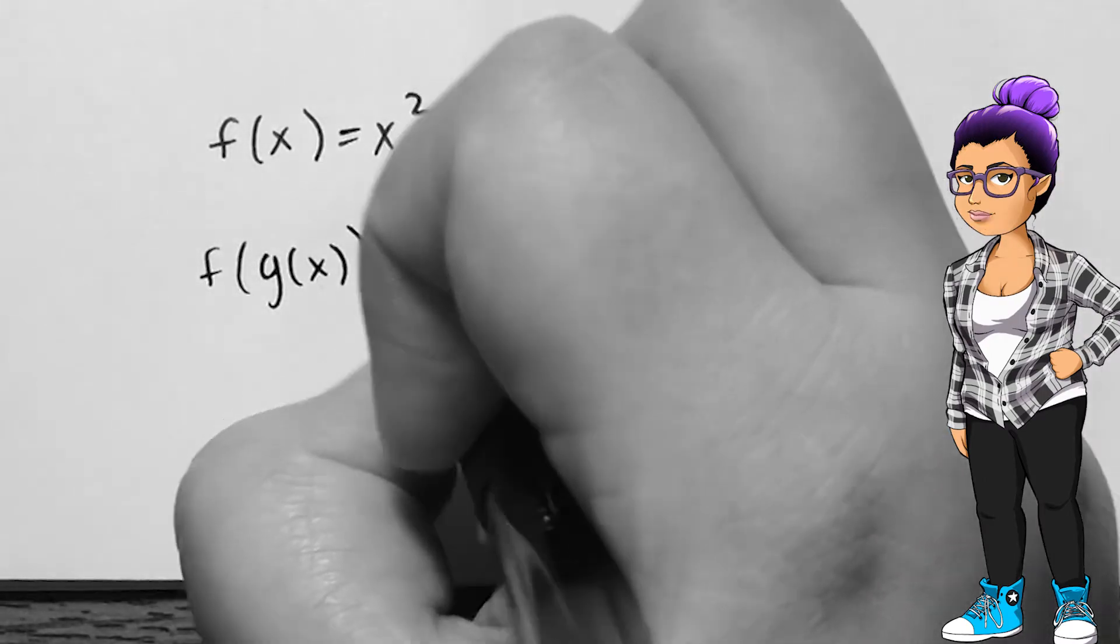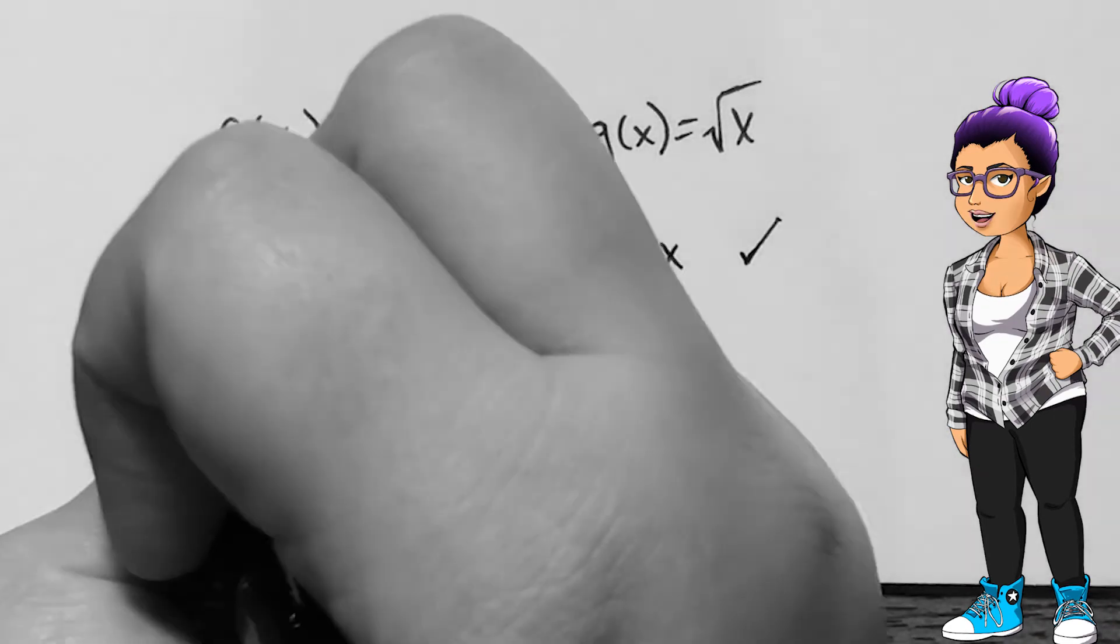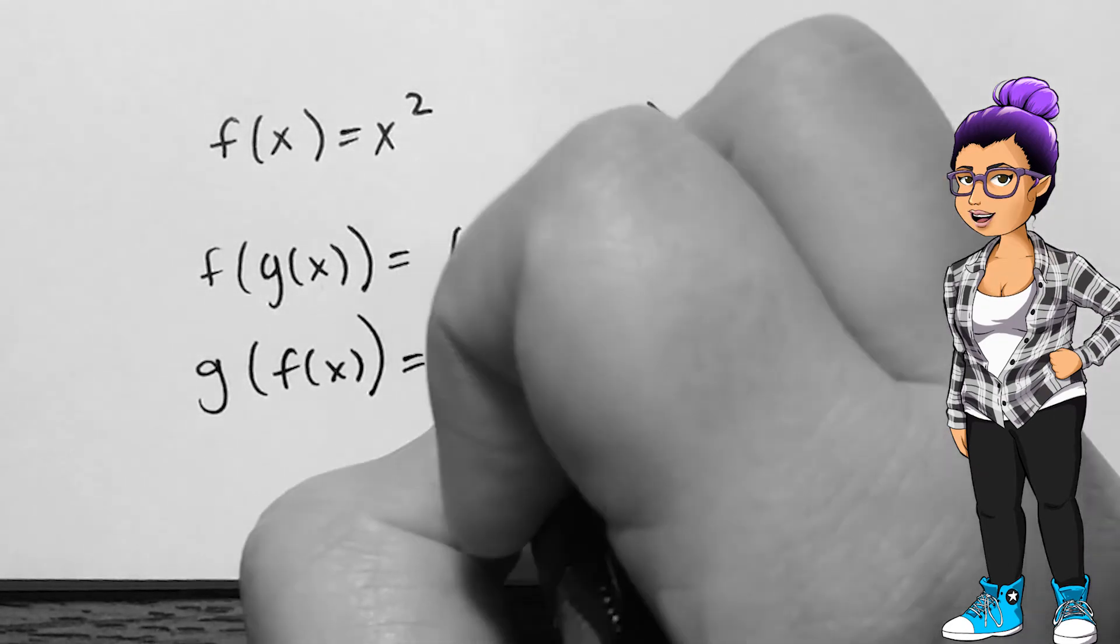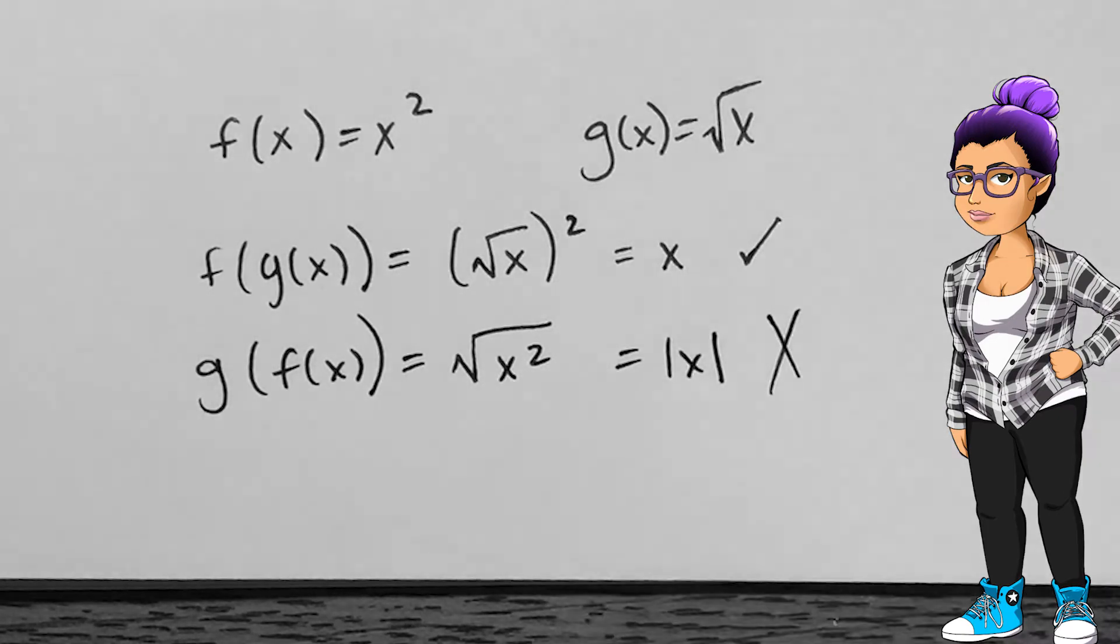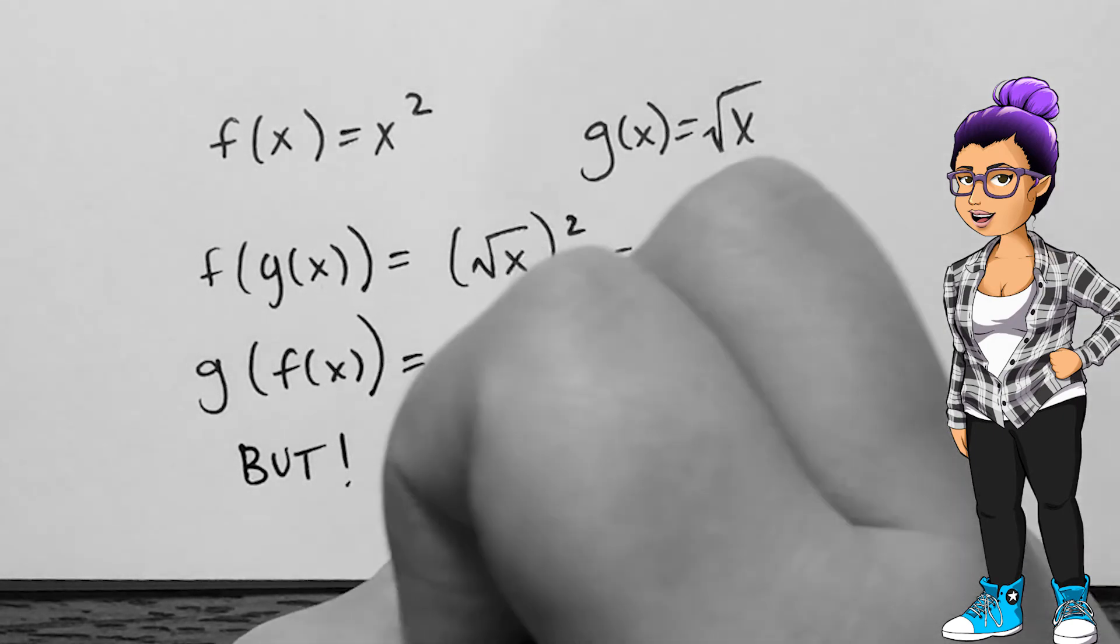When I find g of f of x, I do not get x but absolute value of x since any number can go into the composition but only positive versions are coming out. Notice too that the domain of f of g of x is different than g of f of x. Even though it looks promising, they are not inverses.